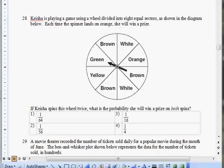Number 28 is a probability question. We have a spinner divided into 8 equal sections or sectors. Keisha wins each time it lands on orange. If she spins it twice, what is the chance that she wins on both spins? The probability of Keisha winning on the first spin is: count how many oranges there are—there's one orange out of 8. The chance of her winning the first spin is 1 out of 8.